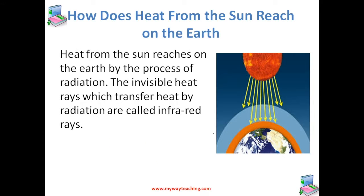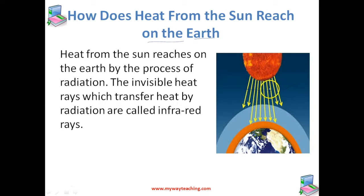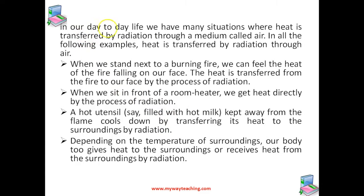Heat from the sun is being transferred to us which makes us feel hot. Heat from the sun reaches the earth by the process of radiation. The invisible heat rays transfer heat by radiation — they are called infrared rays and they are invisible. In our day-to-day life, we have many situations where heat is transferred by radiation through a medium called air, and in all the following examples, heat is transferred by radiation through air.